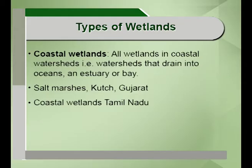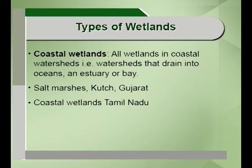The types of wetlands can be categorized into three types: coastal, inland and man-made wetlands. Coastal wetlands include all wetlands in coastal watersheds that can drain into an estuary or a bay. India has a very long coastal belt of around 7,500 kilometers, where we find the Sundarbans of West Bengal, the Andaman and Nicobar, coral reefs in Lakshadweep, the salt marshes of Kutch in Gujarat, coastal wetlands in Tamil Nadu and the Kalivelu wetlands in Andhra Pradesh.